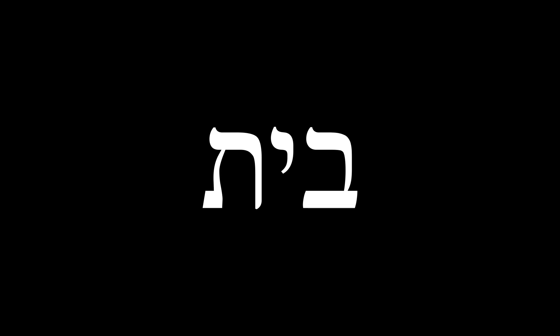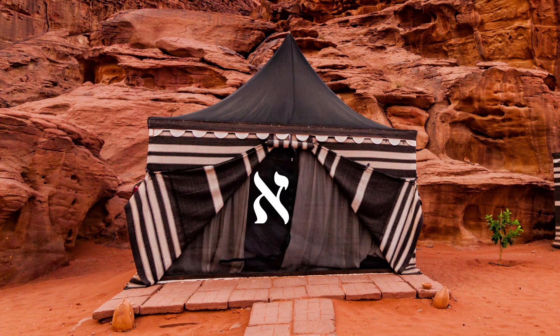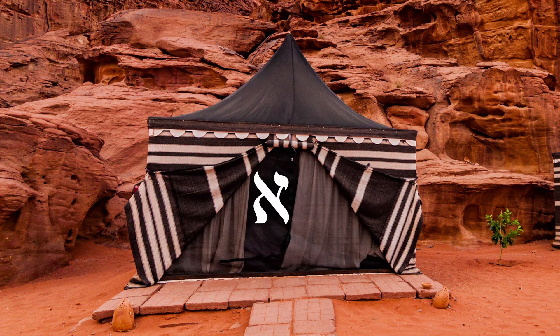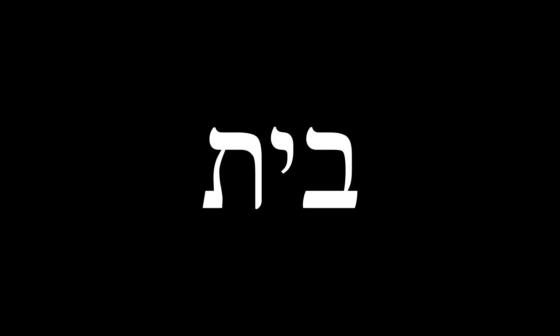Bet is spelled Bet-Yod-Tav. Following the evolution of these letters into our Latin alphabet, these letters became B-I-T, as in bit. The superposition between one and zero that Aleph represents is contained by the Bet, so in this way it's the conception of the inconceivable — thus the perfect letter to start off creation, 'in the beginning.'